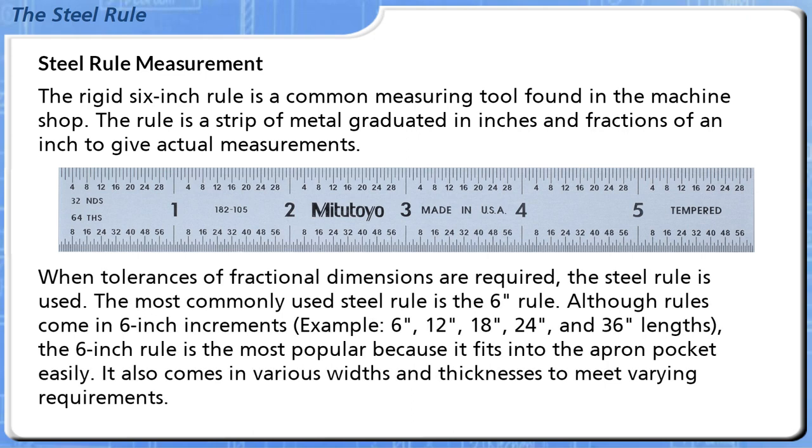When tolerances of fractional dimensions are required, the steel rule is used. The most commonly used steel rule is the 6-inch rule. Although rules come in 6-inch increments, for example, 6, 12, 18, 24, and 36-inch lengths, the 6-inch rule is the most popular.